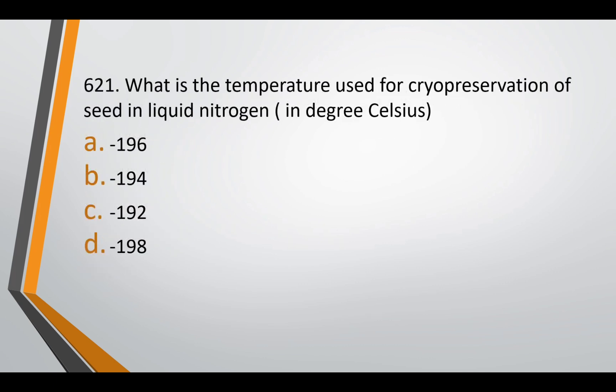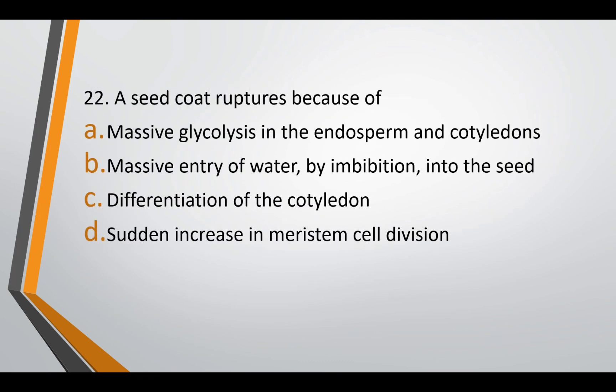Question twenty-one: the temperature of cryopreservation used in preservation of seed — the options are in degrees Celsius: minus 196, minus 194, minus 192, or minus 198. The correct answer is option A — minus 196 degrees Celsius. Question twenty-two: a seed coat ruptures because of — massive glycolysis in endosperm and cotyledon, massive entry of water by imbibition into seed, differentiation of the cotyledon, or sudden increase in meristem cell division. The correct answer is option B — massive entry of water by imbibition into the seed.